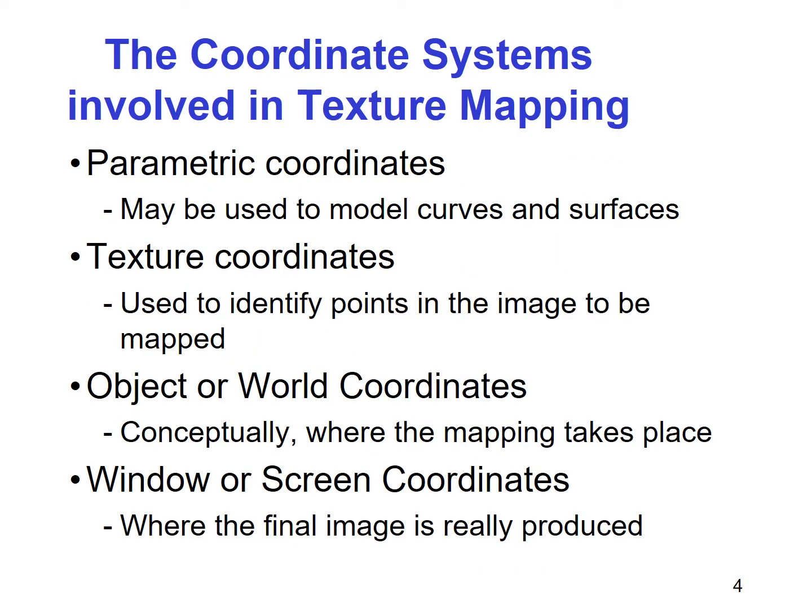The coordinate systems involved in texture mapping are: parametric coordinates, which may be used to model curves and surfaces; texture coordinates, which are used to identify points in the image to be mapped; object or world coordinates, conceptually where the mapping takes place; and window or screen coordinates, where the final image is to be produced.